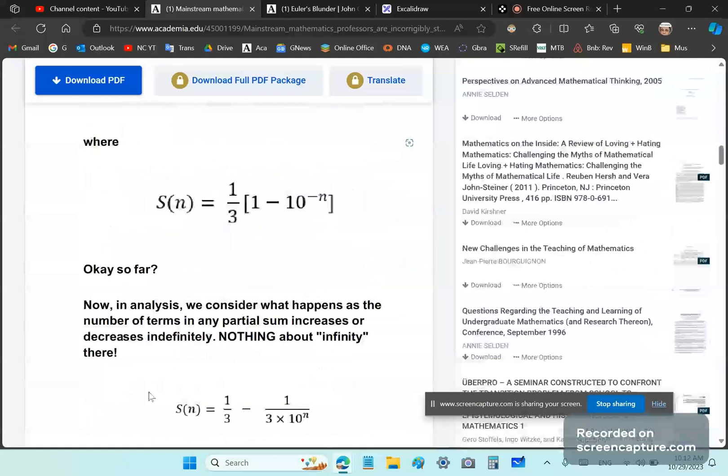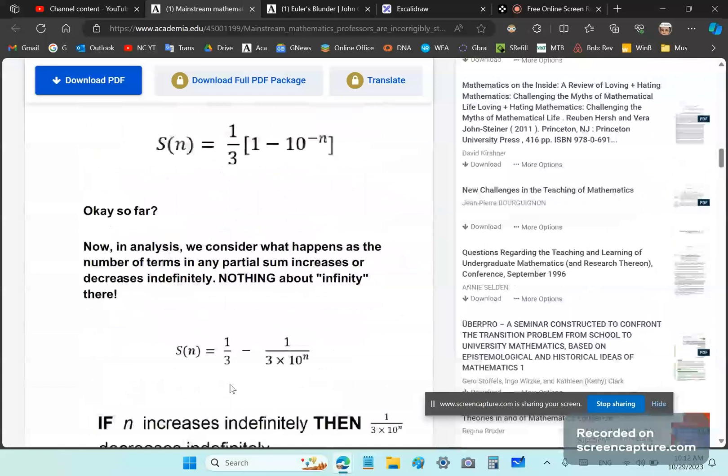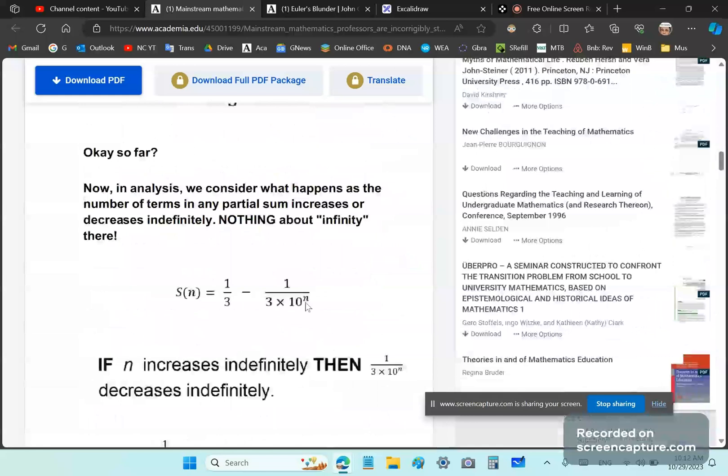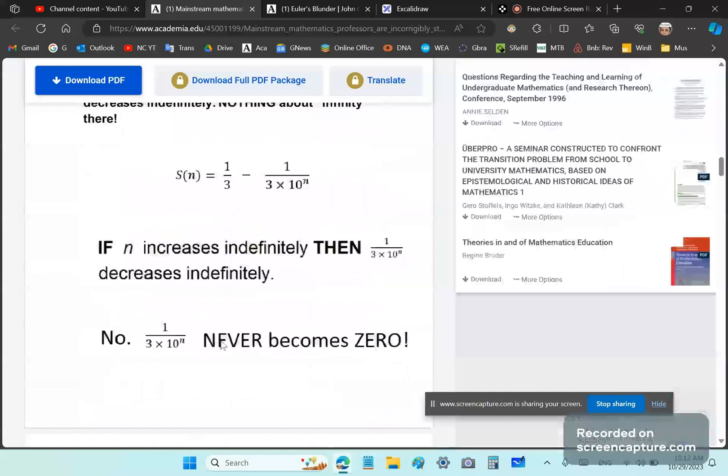Infinity is a garbage concept. It doesn't exist, can't be reified in any way. It's total bullshit. So we consider what happens as n increases indefinitely. And if it does, we find that this fraction here decreases indefinitely and that the whole expression tends towards 3, towards a third.